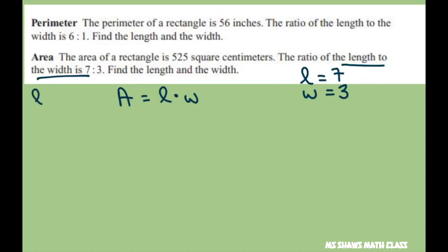So length to width is 7 to 3. We're just going to substitute: 525 equals 7X times 3X, so 525 equals 21X squared. Divide both sides by 21.